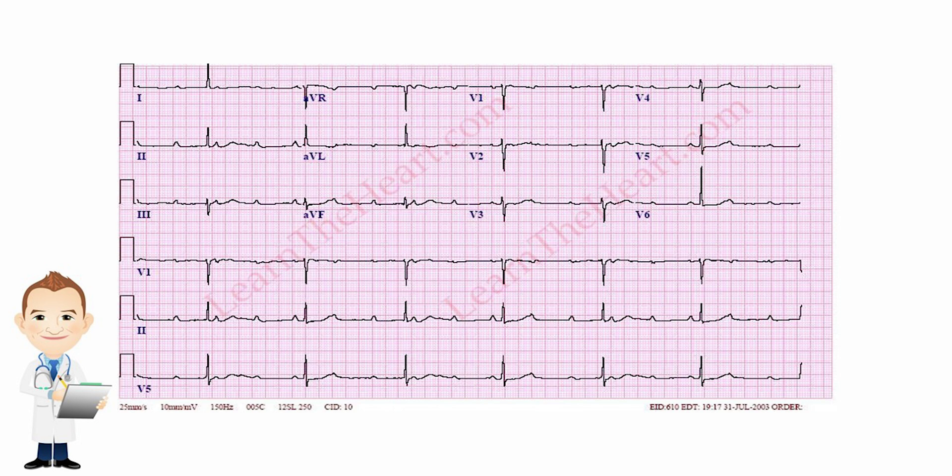This next EKG has a rate of 6 large boxes — that's quite low, around 36 bpm. Whenever they're bradycardic, you should always look for a third-degree heart block. In this case, I look at the PR intervals. You'll notice right down here at the bottom where it says V5, the PR interval is quite long.